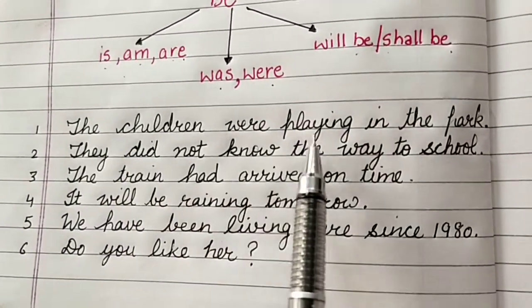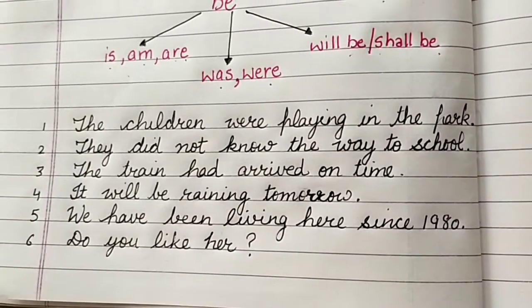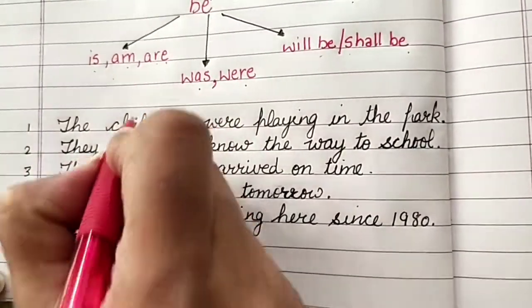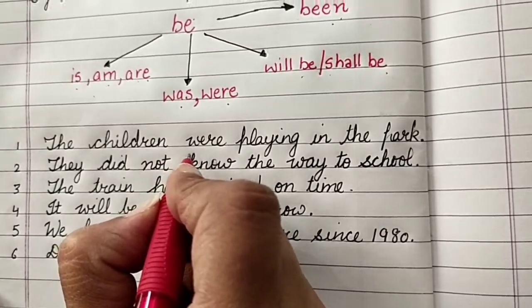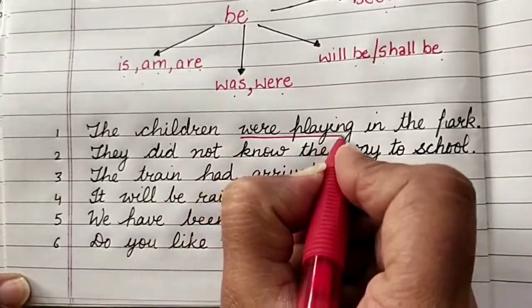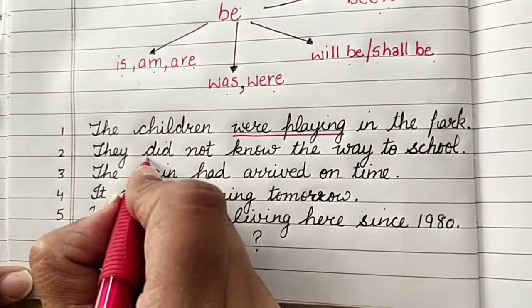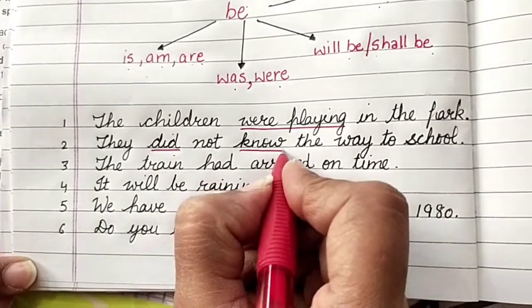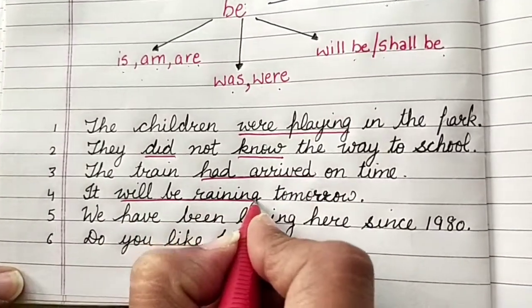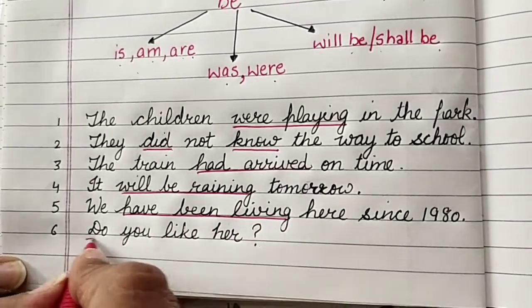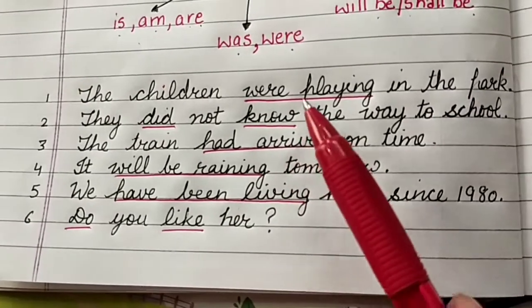The children were playing in the park. When I read this sentence and if I figure out what the verb is, verb in this sentence, then I will underline this, were playing. And similarly in these sentences, did and know, had arrived, will be raining, have been living, do and like.